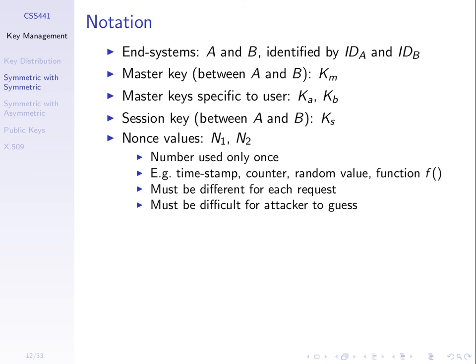Nonces are commonly used to stop replay attacks. If I send a packet with a nonce and want to do a similar thing later, the nonce value will be different, and the receiver can distinguish the two. If an attacker replays an old message, the receiver sees the nonce is the same as before and identifies it as a replay. So nonces are commonly used to identify replay attacks, and you'll see them throughout the upcoming protocols.